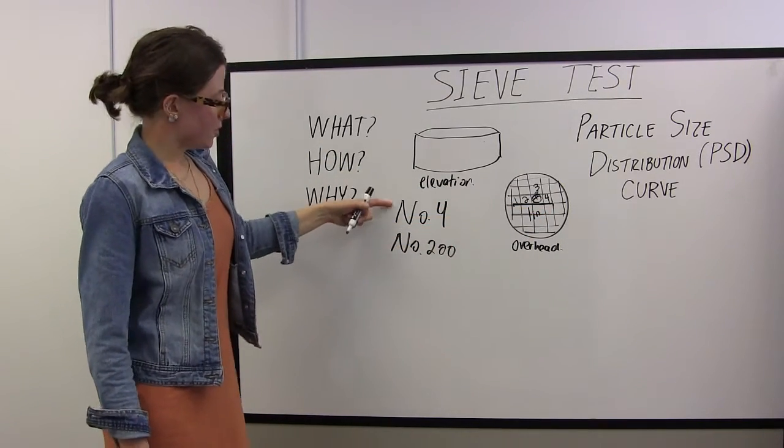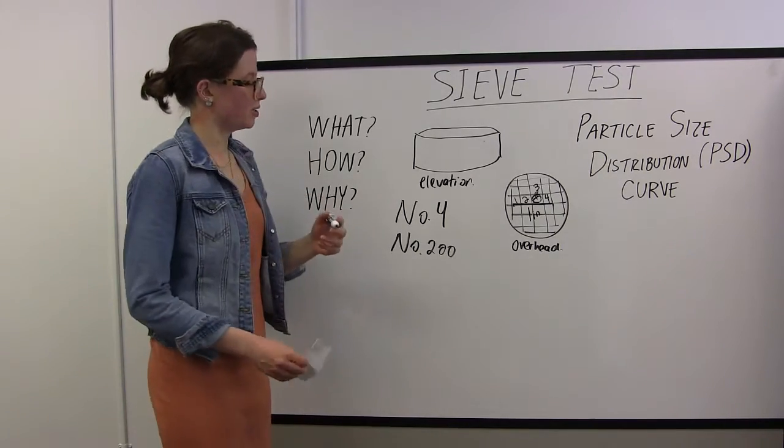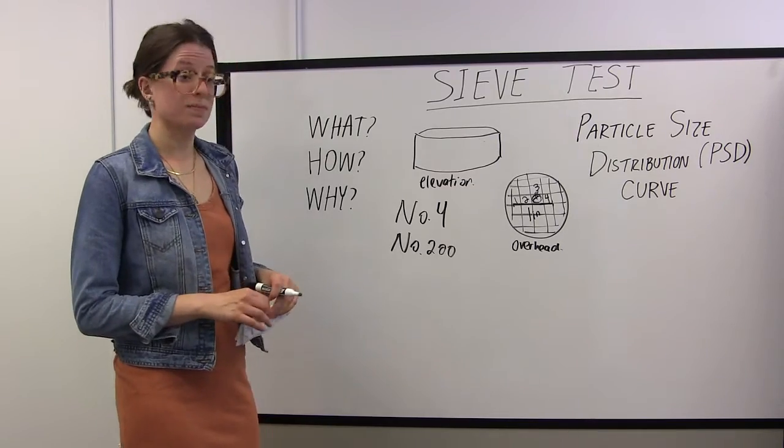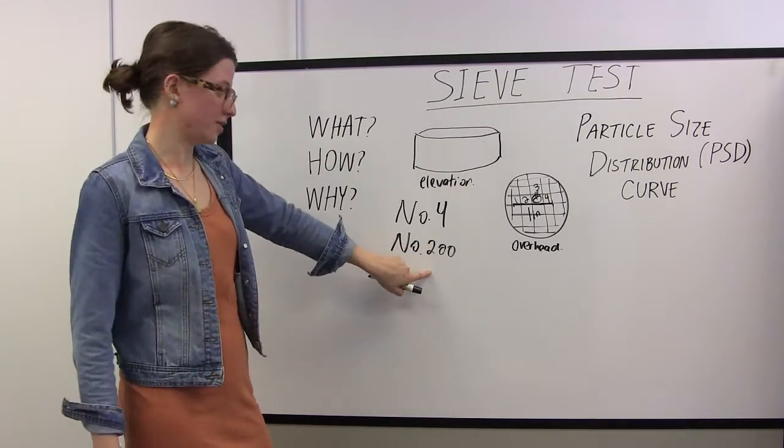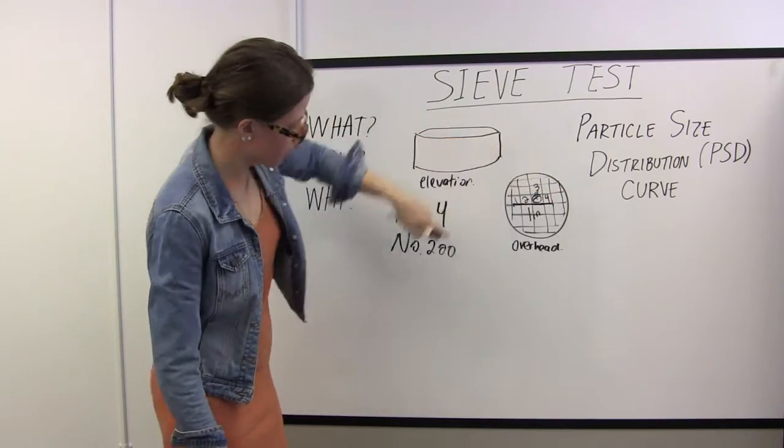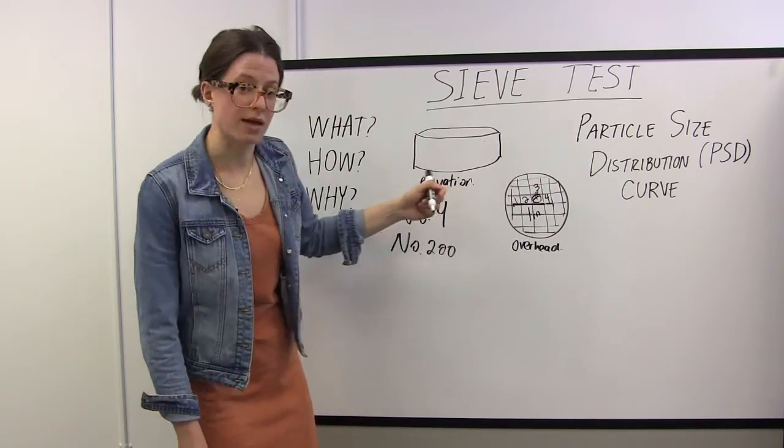Comparing these two, the number four and number 200, which one would we expect to have smaller sieve openings? Exactly, the number 200 sieve. Because unlike the number four, which has only four per inch, the number 200 has 200 that make up that same physical distance.